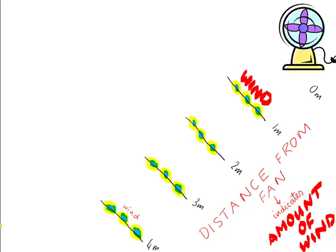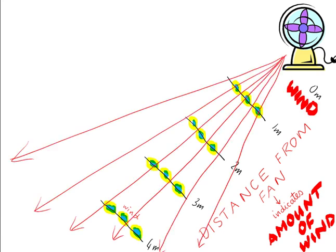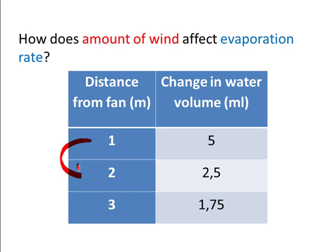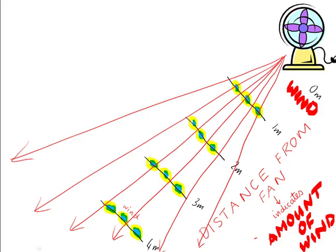Now, you must realize, of course, the distance from fan is related inversely to amount of wind. It's not inverse proportion, but there's some kind of inverse relationship. In other words, the closer to the fan, the more wind. So one might think, okay, here we have inverse proportion between distance from fan and change in water volume, and so that shows direct proportion between amount of wind and evaporation rate. But that's not so.